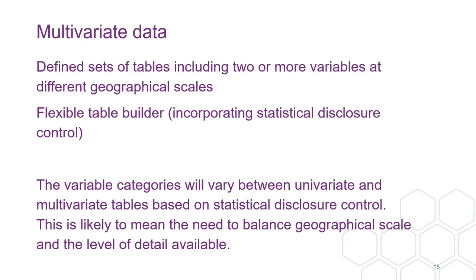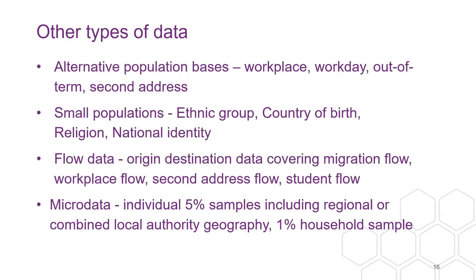In terms of multivariate data, what we're beginning to get is some defined sets of tables. My understanding is those will become available over the next couple of months, and into March we will get what's going to be called the flexible table builder, which will dynamically calculate tables for you but will apply statistical disclosure control — so things seen as disclosive won't be shown. The variable categories are also likely to vary between univariate and multivariate. There's always a trade-off between the detail of geography and the level of detail you want.